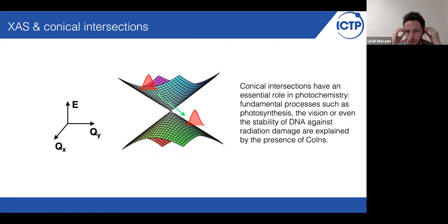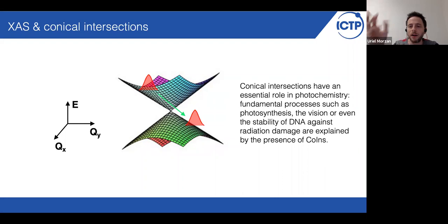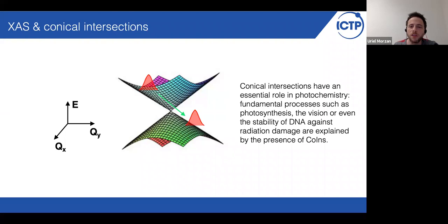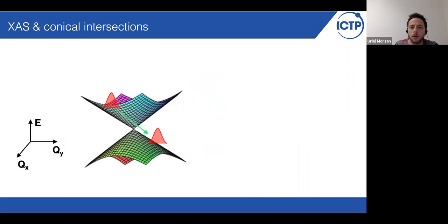The passage through a conical intersection is extremely fast — so fast that right now there are almost no experiments probing them directly. In general, there is some assumption used to think that they are in a certain place in the potential energy surface. To motivate the study of conical intersections: they are essential to understand photochemistry and any photochemical process. Processes as fundamental as photosynthesis, vision, or the stability of DNA against radiation damage can be explained by the position and shape of certain conical intersections. Being able to study them and eventually to control them is a really exciting topic.